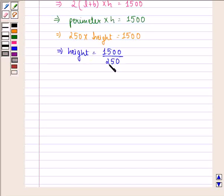We know that 250 multiplied by 6 gives us 1500, so height is equal to 6 meter. So our answer to this question is that height of the wall is 6 meter.